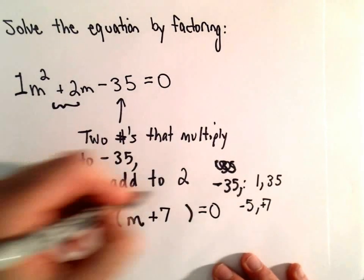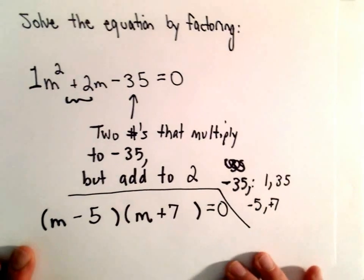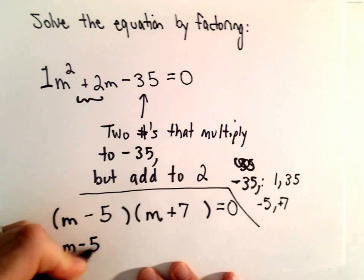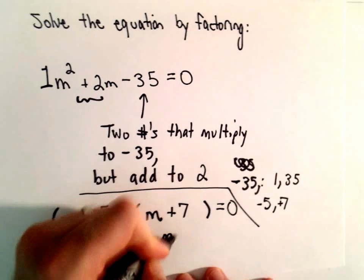So we'll set that equal to 0. And now, once we have our equation factored, we just take each factor, set it equal to 0, and solve.